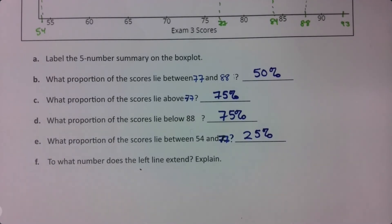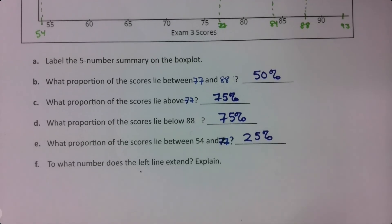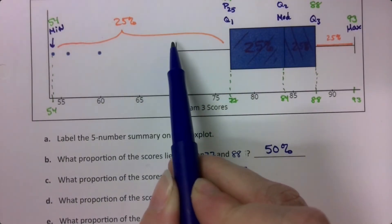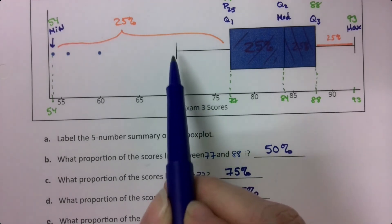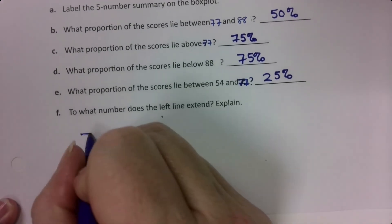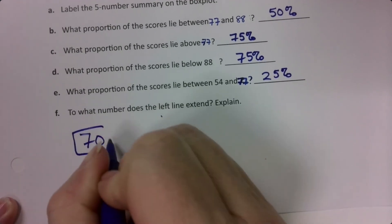To what number does the left line extend? Explain. Well, let's look at it. The left line is this bit right here. So what number is that going to? The answer is it's going to 70. So now why 70? What is going on?